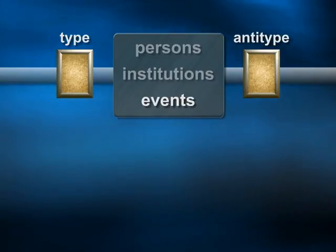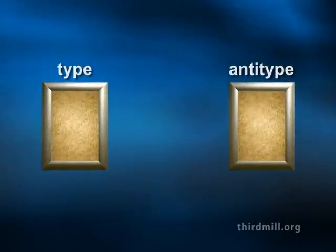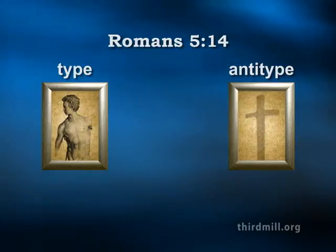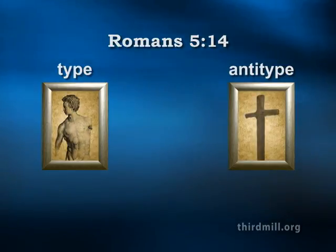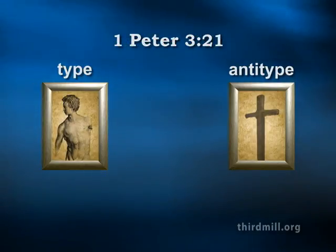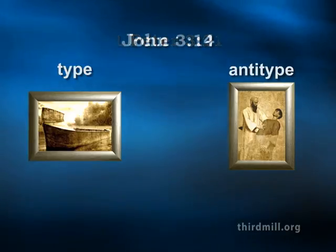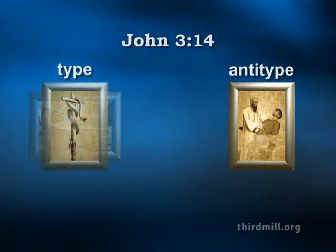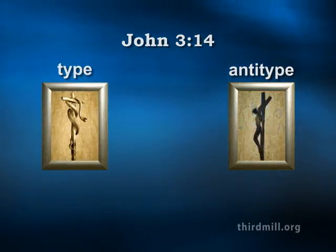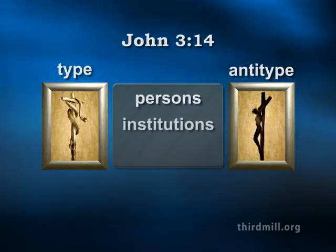The examples of New Testament typology we have noted already reflect some of this variety. Paul's typology between Adam and Christ in Romans chapter 5 verse 14 compared one significant person with another significant person. In 1 Peter chapter 3 verse 21, Peter compared the event of Noah's flood with the institution of Christian baptism. In John chapter 3 verse 14, Jesus compared the event of Moses lifting the bronze serpent with the event of his own crucifixion. Other combinations occur elsewhere in Scripture. Whatever the case, typologies compare significant persons, institutions, and events.